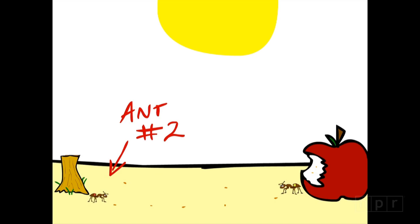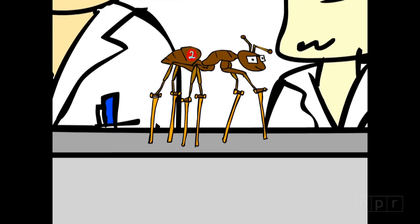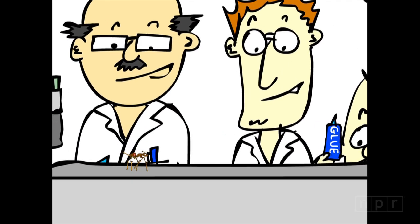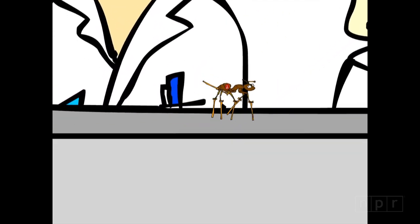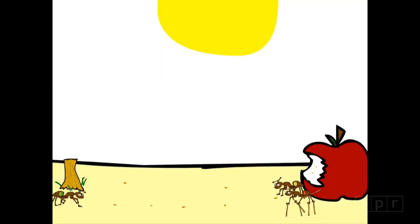Now, ant number two. She also marched to the food source, but when she got there, they grabbed her and super glued little pig bristles. They're kind of like stilts. So now she's a much taller ant, and therefore every step she takes will be that much longer. Careful. Careful.